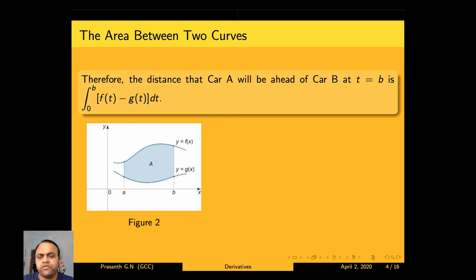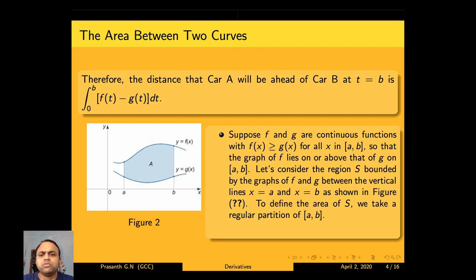Now we generalize that to the area between two curves. Given two curves y = f(x) and y = g(x), our assumption is that f and g are continuous functions and f(x) ≥ g(x) for all x in closed interval [a, b], so the graph of f lies on or above that of g. Consider the region s bounded by the graphs of f and g between the vertical lines x = a and x = b.